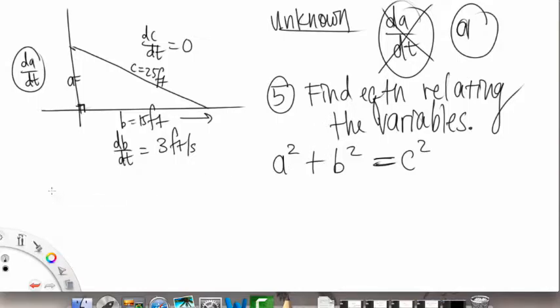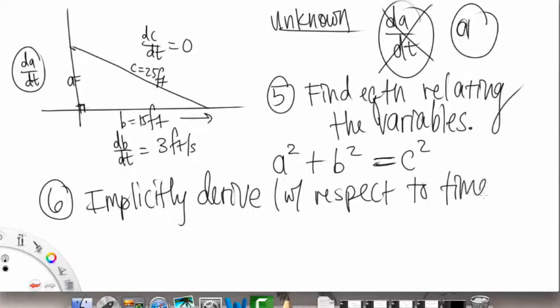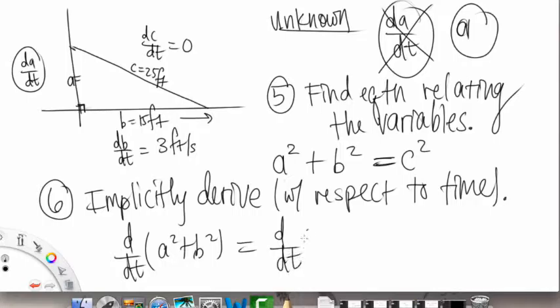And then what we're going to do, what we just learned in the last section, is we're going to implicitly derive, and usually with respect to time. So with respect to time as it passes. So what that means is we're going to d/dt both sides. So d/dt of A squared plus B squared equal to d/dt of C squared.